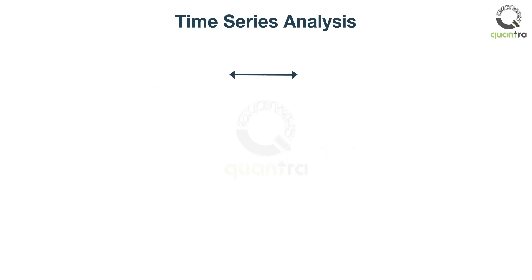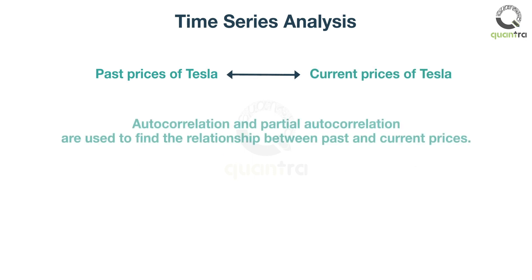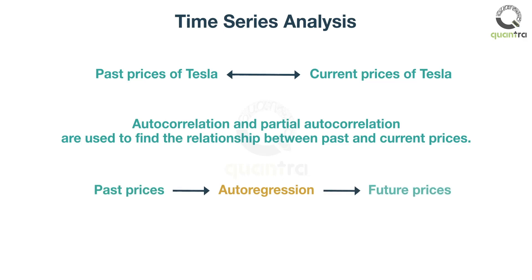First, you can find if there is any relationship between the past and current Tesla prices. To do that, you can use autocorrelation and partial autocorrelation — both are statistical measures that tell us how the current price is related to the past price. If there is a relationship between past and current stock prices, you can predict the future prices. This is done using a concept called autoregression, a time series model which is very similar to regression. It uses past stock prices as input to a regression equation to predict the future prices. Again, statistics comes to the rescue and helps in achieving the task of future price prediction.